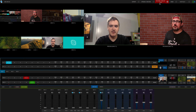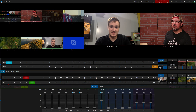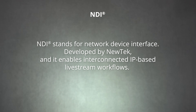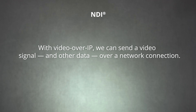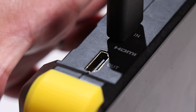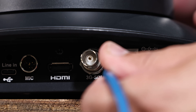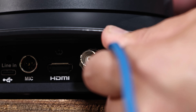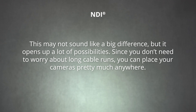First, let's look at Skype and NDI — it's our simplest option. Skype, of course, allows us to video chat with people across the internet. NDI stands for Network Device Interface. Developed by NewTek, it enables interconnected IP-based live stream workflows. With video over IP, we can send a video signal and other data over a network connection. Typically, we use HDMI and SDI cables to connect our camera sources to our live stream encoder, but thanks to video over IP, we can now use a network connection instead. This may not sound like a big difference, but it opens up a lot of possibilities.